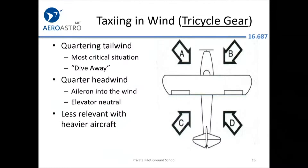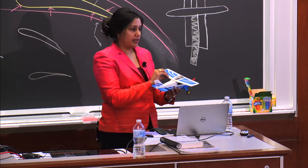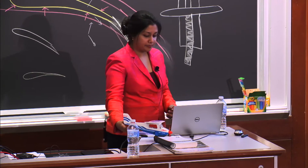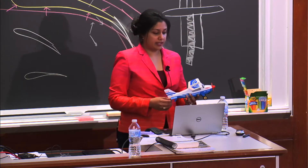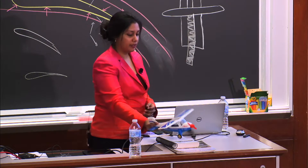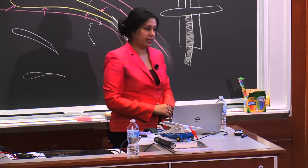When you're taxiing to the runway, you're probably going in different directions with respect to the wind. It's important to think about making certain corrections to your aircraft's controls — the rudder and ailerons and elevator. When taxiing on the ground, your rudder is used to make turns. The ailerons and elevator need to be positioned such that your airplane stays on the ground and isn't inadvertently lifted by a gust of air.